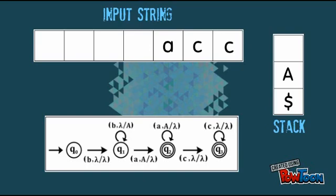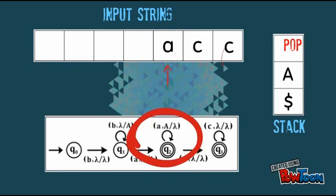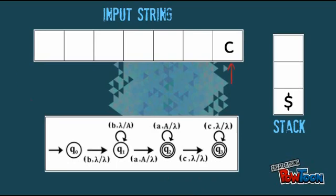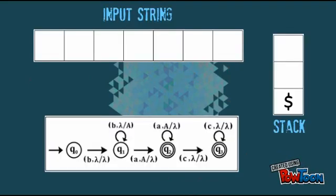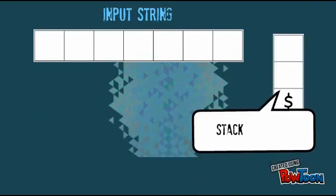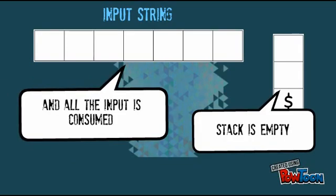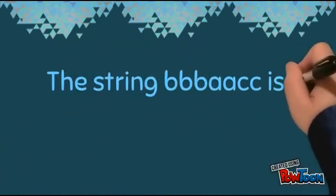Then, read the fifth string, push A. Read the sixth string, push lambda. Then, read the seventh string, push lambda. Stack is empty and all the input is consumed. So, the string that we test is accepted.